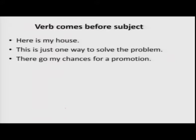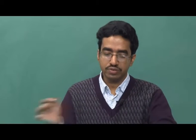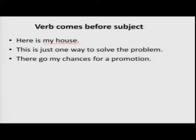In some sentences, the verb comes before the subject. Look at these examples: 'Here is my house,' 'This is just one way to solve the problem,' 'There go my chances for a promotion.' The verb in all these sentences comes first. Nevertheless, the same rules apply: if the subject is singular, the verb is singular; if the subject is plural, the verb is plural. 'My house' is singular, so the verb is singular. 'One way to solve the problem' is singular, so the verb is singular. 'My chances' is plural, so the verb is also plural.